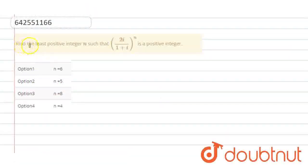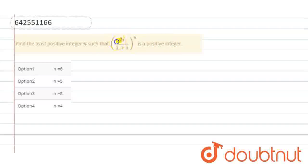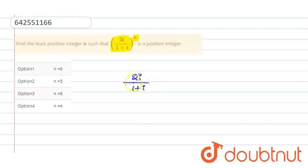Here the question is given: find the least positive integer n such that (2i / (1+i))^n is a positive integer. So we need to find the value of n — the least positive integer — for the given expression (2i / (1+i))^n.